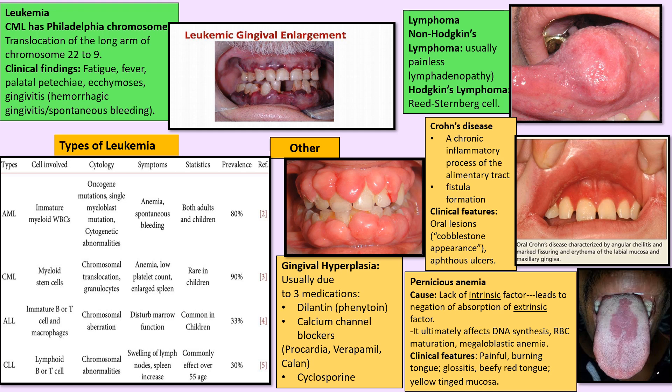Gingival hyperplasia can be caused by phenytoin, cyclosporine, and nifedipine. In pernicious anemia, which is a deficiency of vitamin B12, you will see painful burning tongue, glossitis, beefy red tongue, and yellow-tinged mucosa with involvement of the nerves — a very important sign of vitamin B12 deficiency.